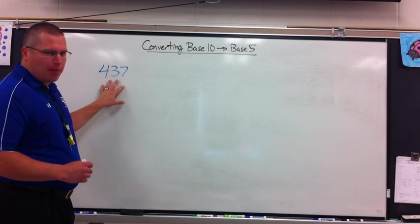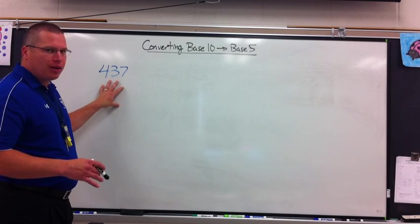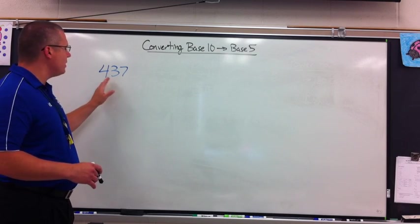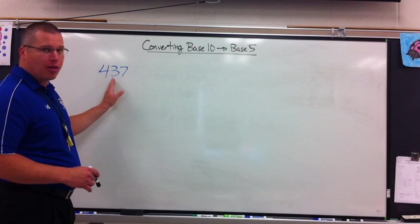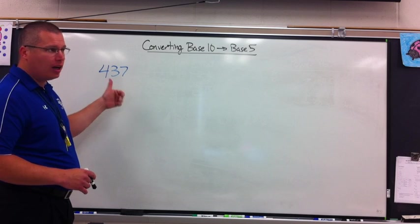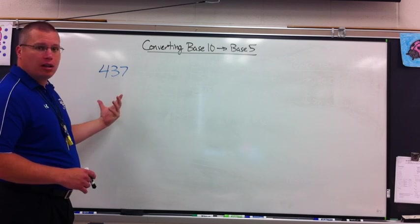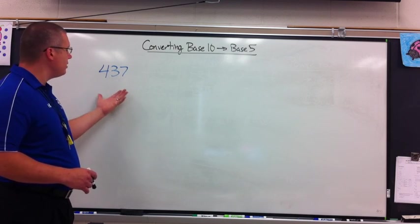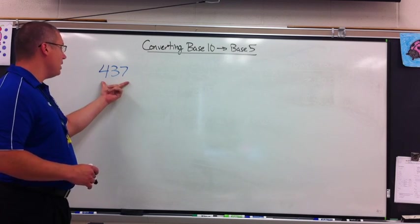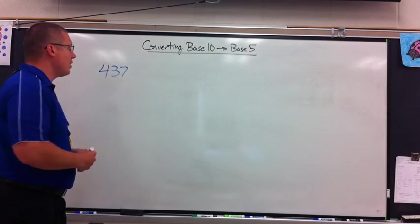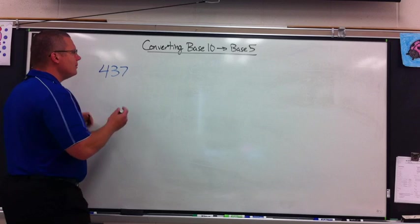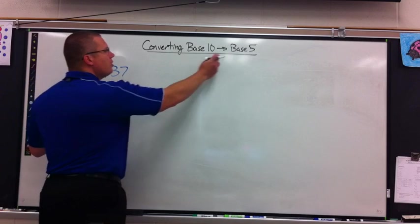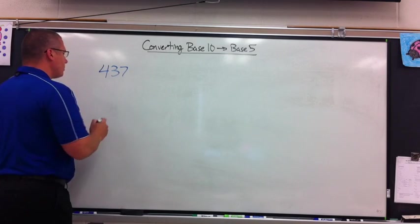So what I'm going to take is the number 437. Notice I said 437 — base 10 means it's in base 10, and it is in base 10 so I can say it that way. What I want to do is convert it into base 5.